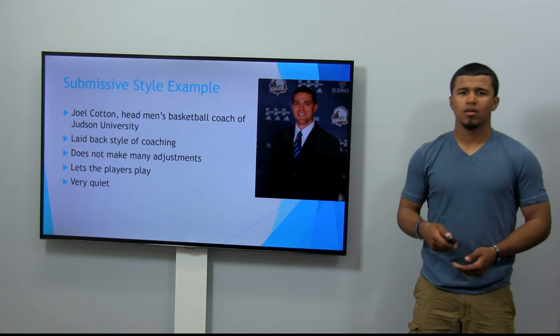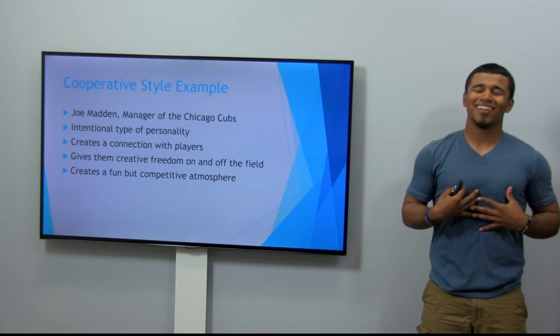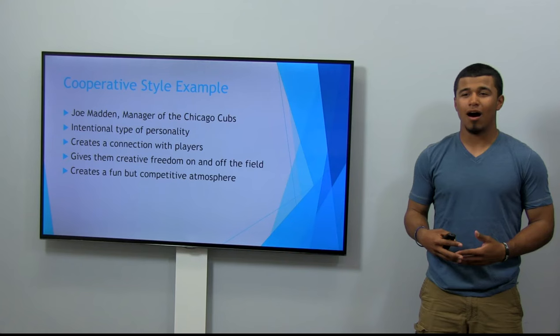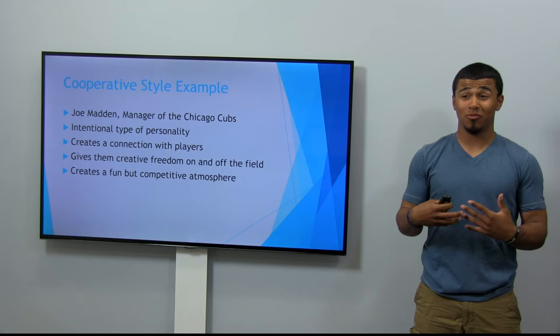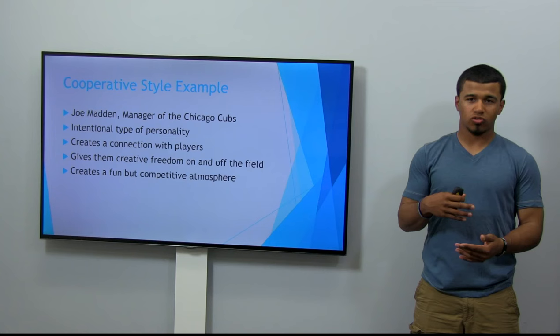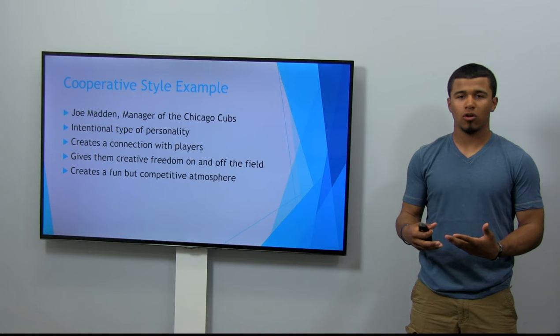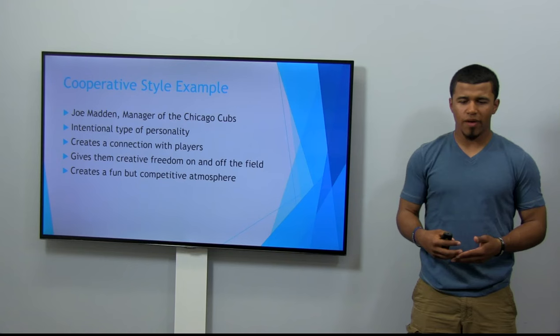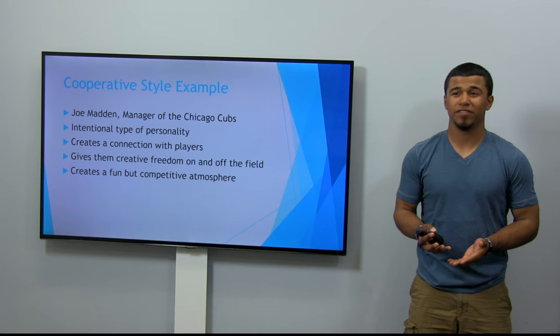Lastly, the cooperative style example is my favorite — Joe Madden of the Chicago Cubs. He's a very intentional type of person who wants to create a bond with his players and his staff. Coming to Chicago as a Cubs fan, he also wanted to create a bond with the fans. This really translates into the cooperative style of coaching — it curates connection and a level of trust. When a big decision comes along, he can talk to his players and coaching staff, and they're all on the same page wanting the same thing. This also gives players and staff creative freedom on and off the field.